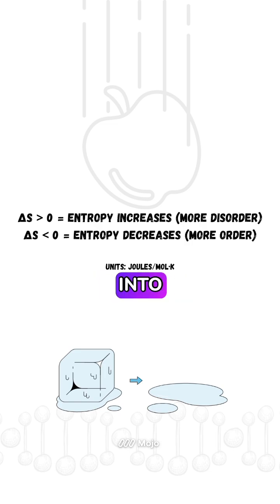For example, when ice melts into water, the molecules go from a fixed arrangement with low entropy to a free-moving state with high entropy. Low entropy equals more order.